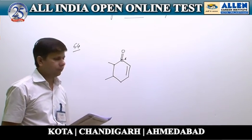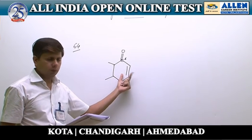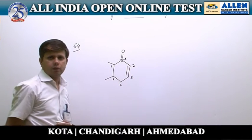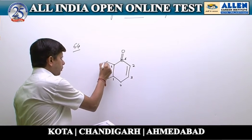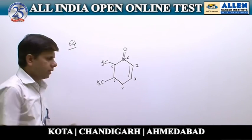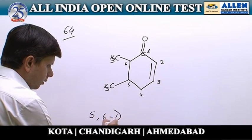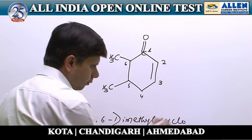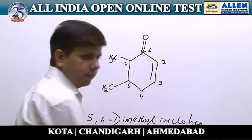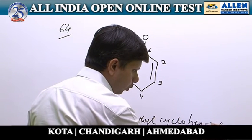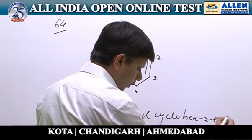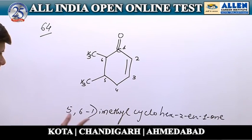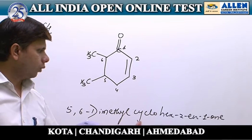After covering the principal functional group, priority is given to the multiple bond over substituents, so numbering will be in the clockwise direction. Two methyl groups are present as substituents at positions 5 and 6: 5,6-dimethyl. The ring has 6 atoms: cyclohex. A double bond is at position 2: cyclohex-2-en. Ketone at position 1: 1-one. Full IUPAC name: 5,6-dimethylcyclohex-2-en-1-one.